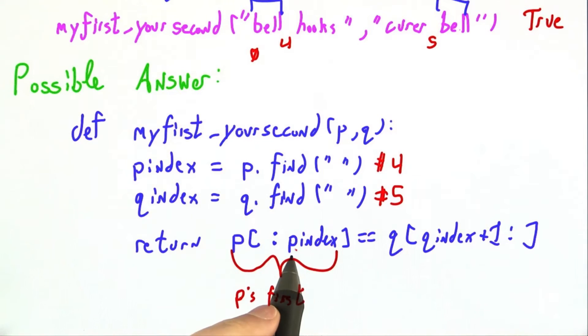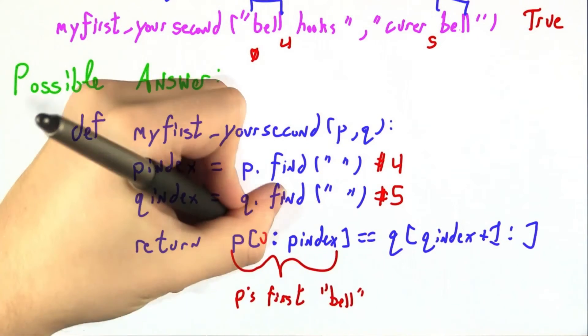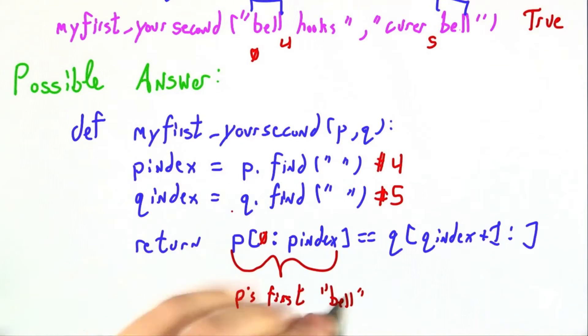This selection goes to the left as far as it can, but does not include p index, so it will be bell. I could also have put a 0 in here. That would have been exactly the same.